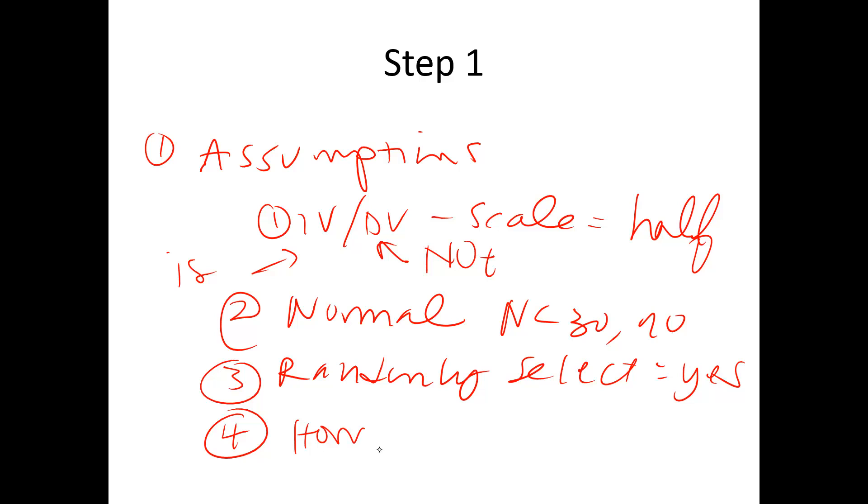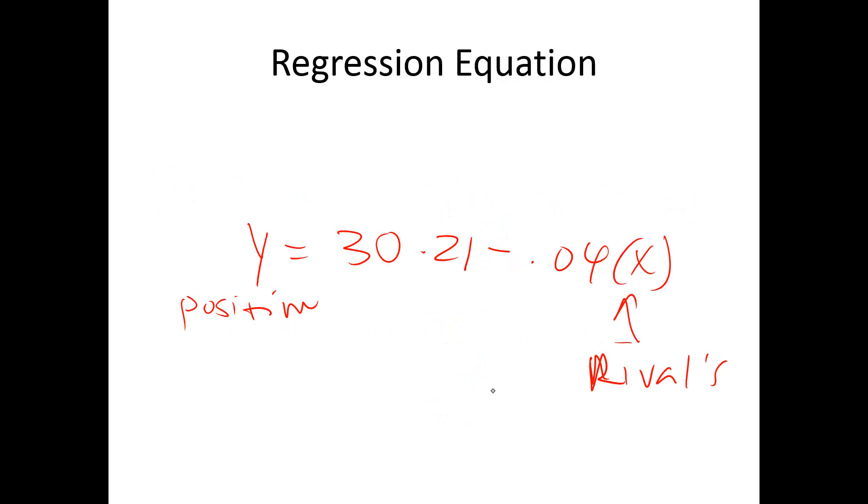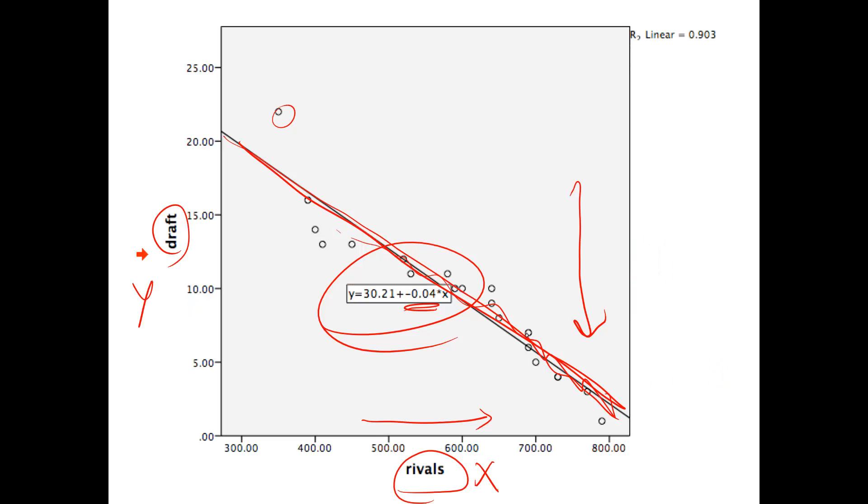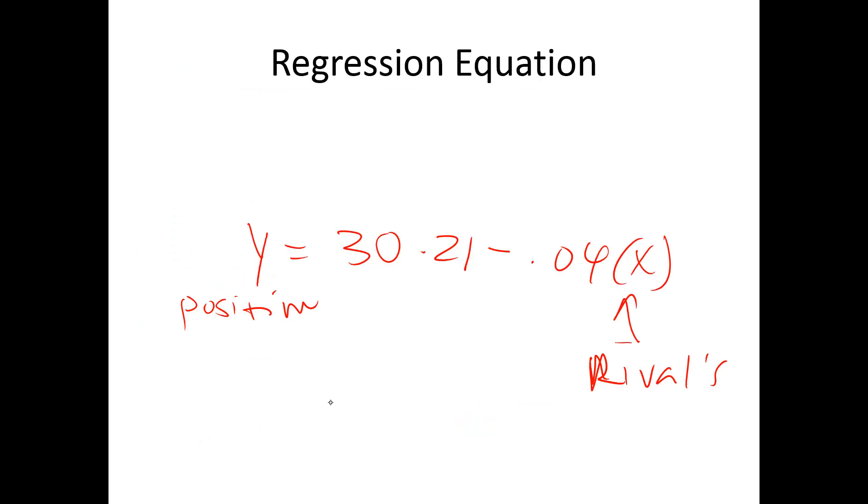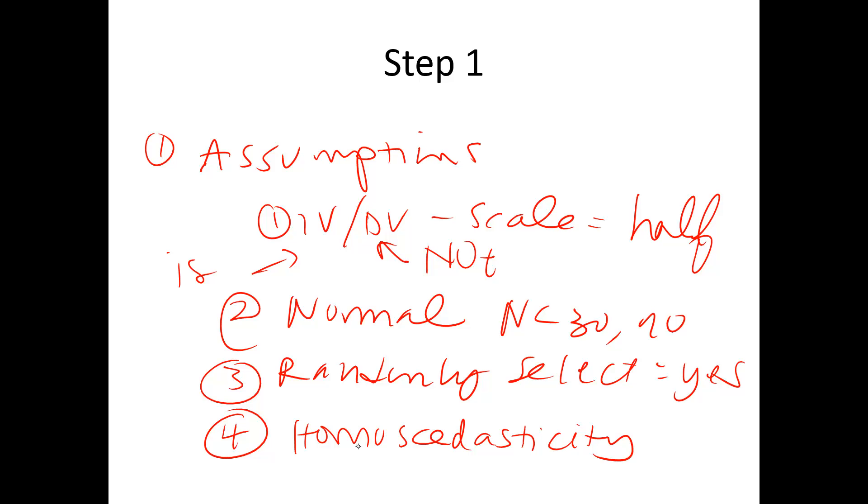The next question is homoscedasticity. I'm going to scroll back and look at my scatter plot here. Most of the dots are very close to the line, and I have this one dude way out here. But we're not going to count off for just one person. I would say yes because they're evenly spread across the line. If you're not sure, just tell me why you said yes or no. I'm going to say yes, they're evenly spread.